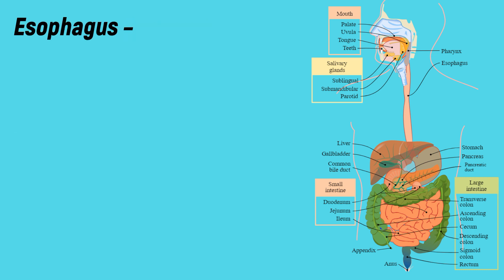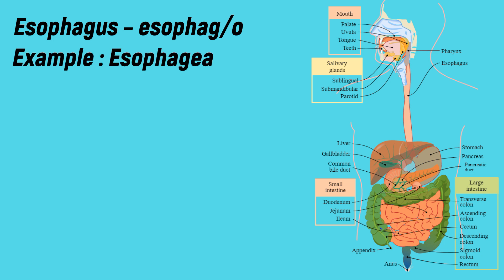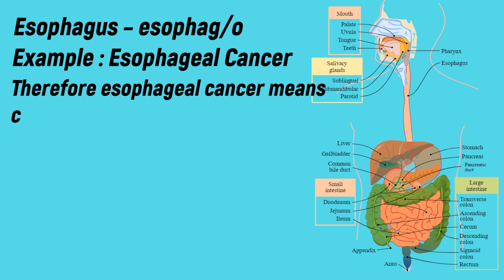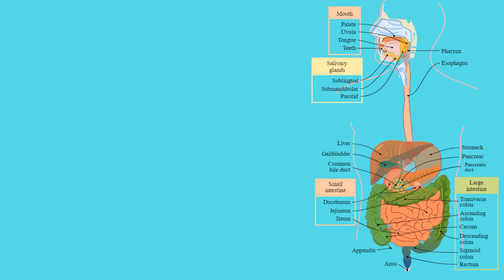Esophagus: the medical term for esophagus is 'esophago'. The 'o' is just a connecting word. Example: esophageal cancer. Esophageal cancer means cancer in the esophagus.